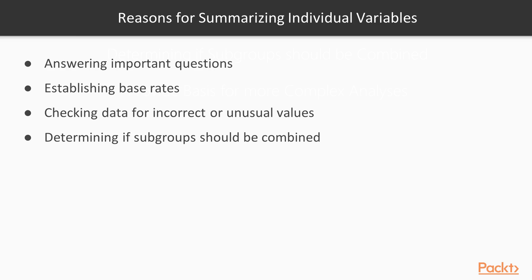Another reason to summarize individual variables is that sometimes you may need to combine groups. For example, with a satisfaction question you might have five levels from very satisfied to not at all satisfied. In the end, it may really should have been a dichotomous variable, so we might want to group some of those categories together to ensure enough cases in each category for appropriate analyses.